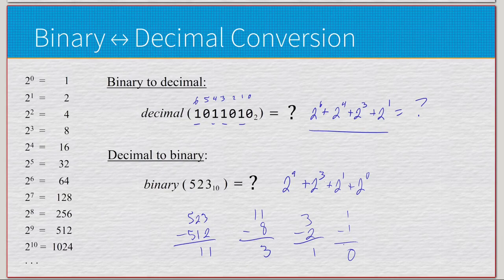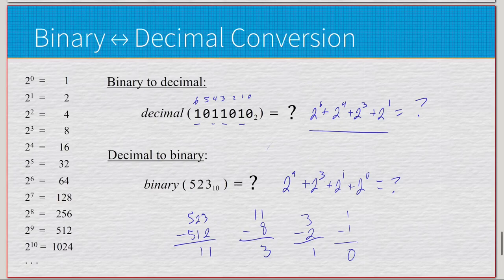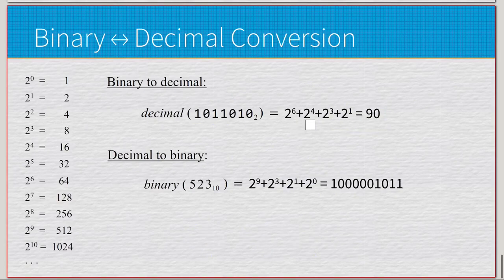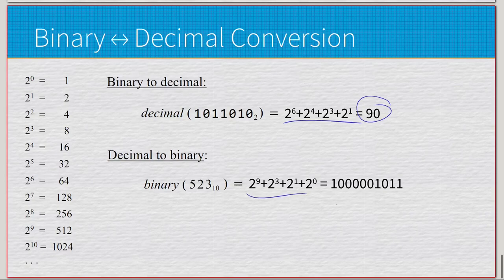So we have a 1 in the 9's place, a 1 in the 3's place, a 1 in the 1's place, and a 1 in the 0's place. Applying these in the appropriate positions, we end up with 1000001011. Overall that's not too bad, and that kind of just details the differences between number systems, how to deal with them, and convert between our traditional decimal to the more machine-like binary.